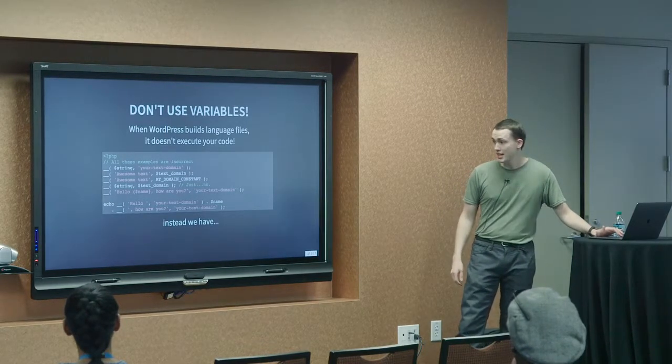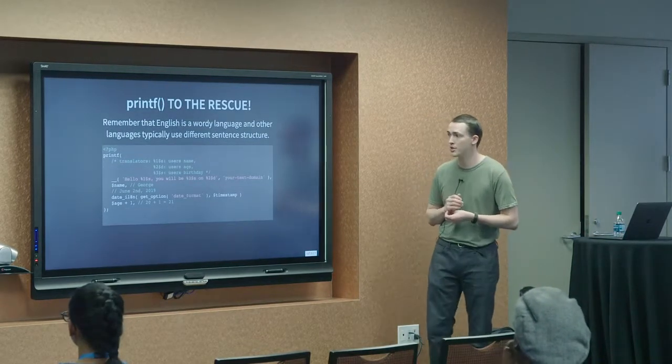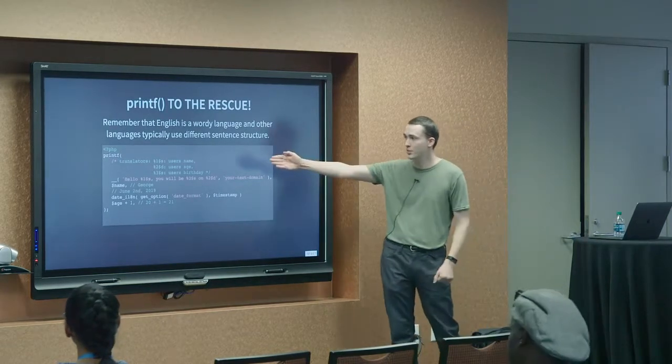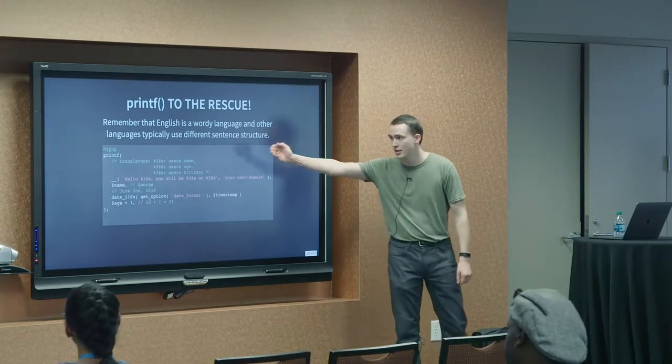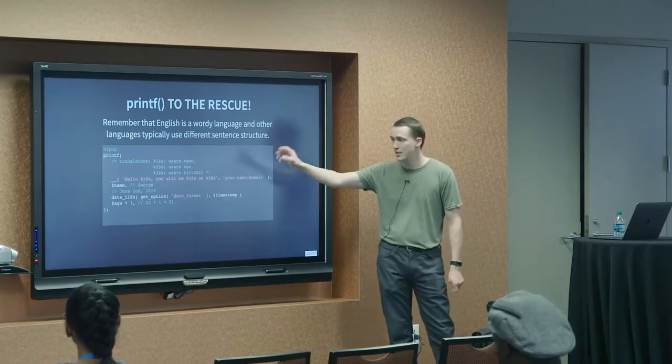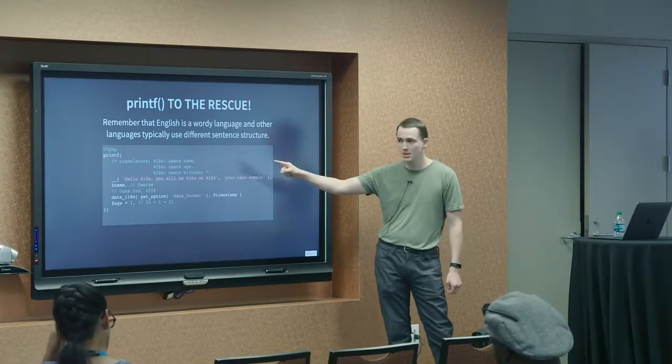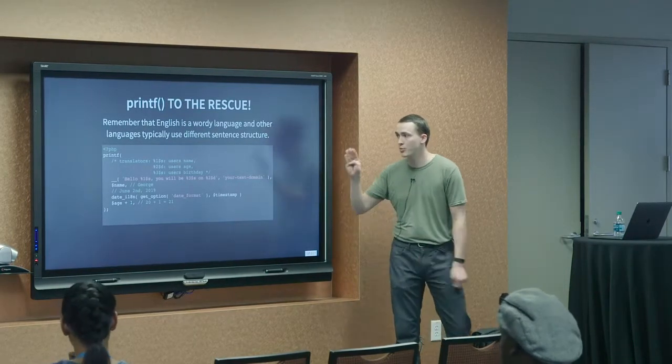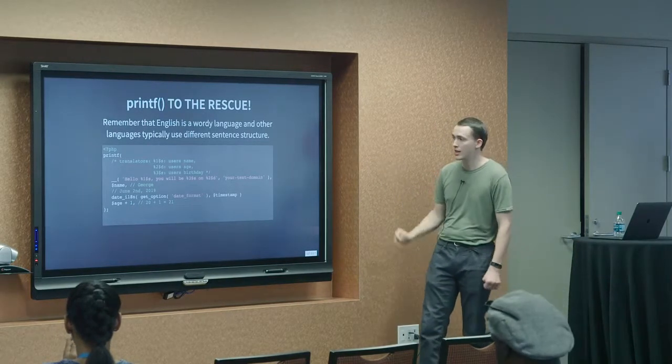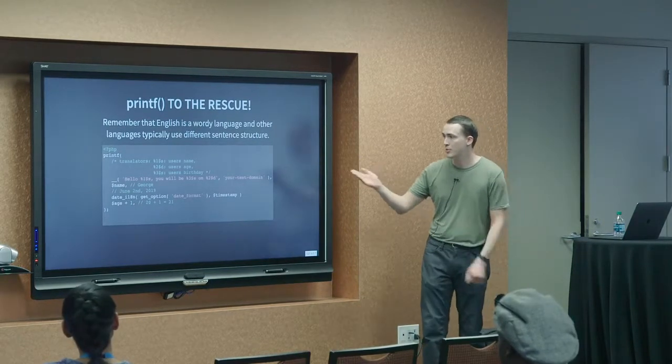So, instead, we have printf, or if you need to return it as a string, you have sprintf. And so, with this, you're able to use the same comments that you've used before for translation comments. And this is actually where it's probably most important to use those comments is because you can specify what the variable in your string is. So, you're able to use the printf placeholders. So, in this example, I've got three different items and I actually have flipped two and three as an example of it doesn't matter which order they end up in.